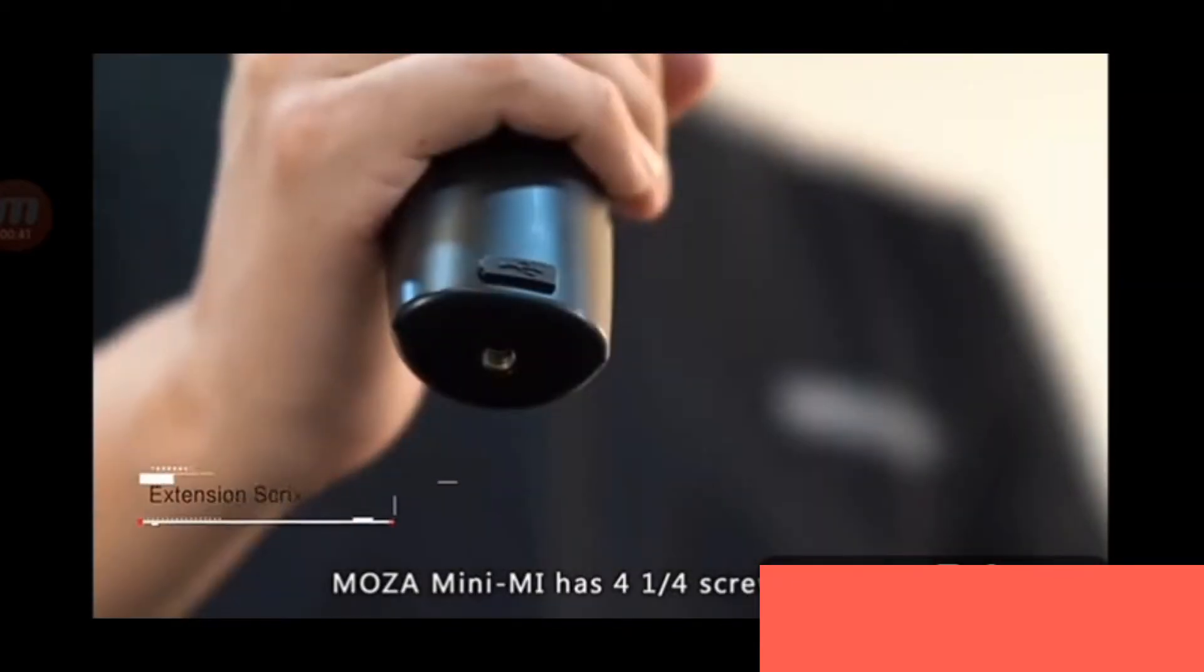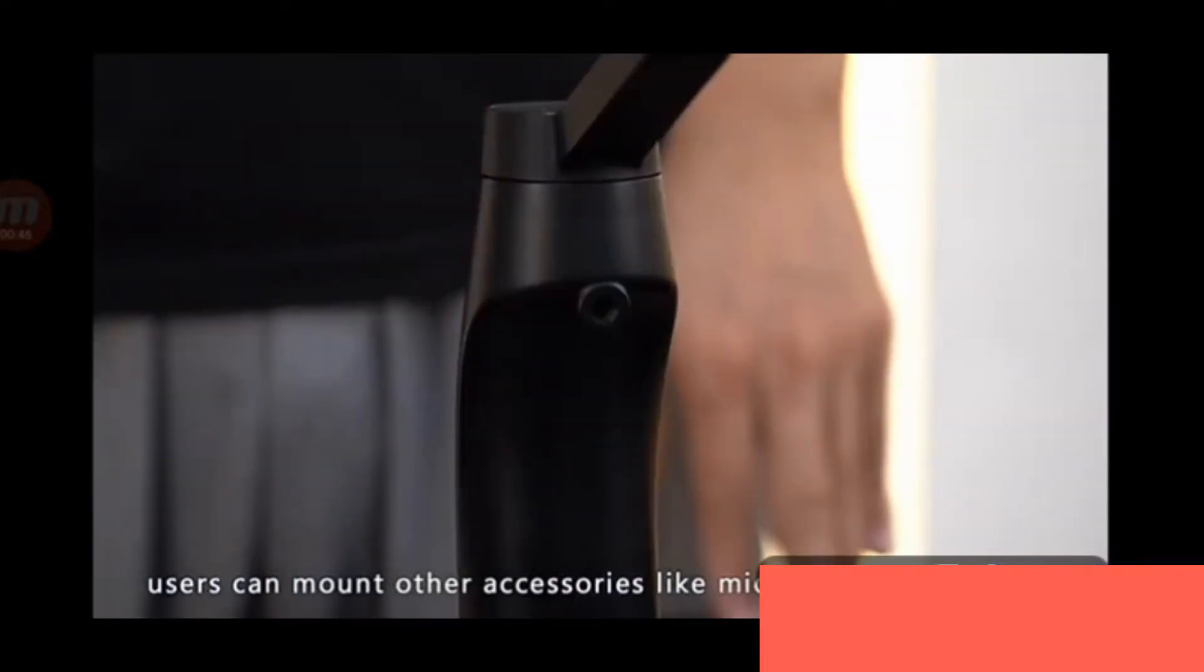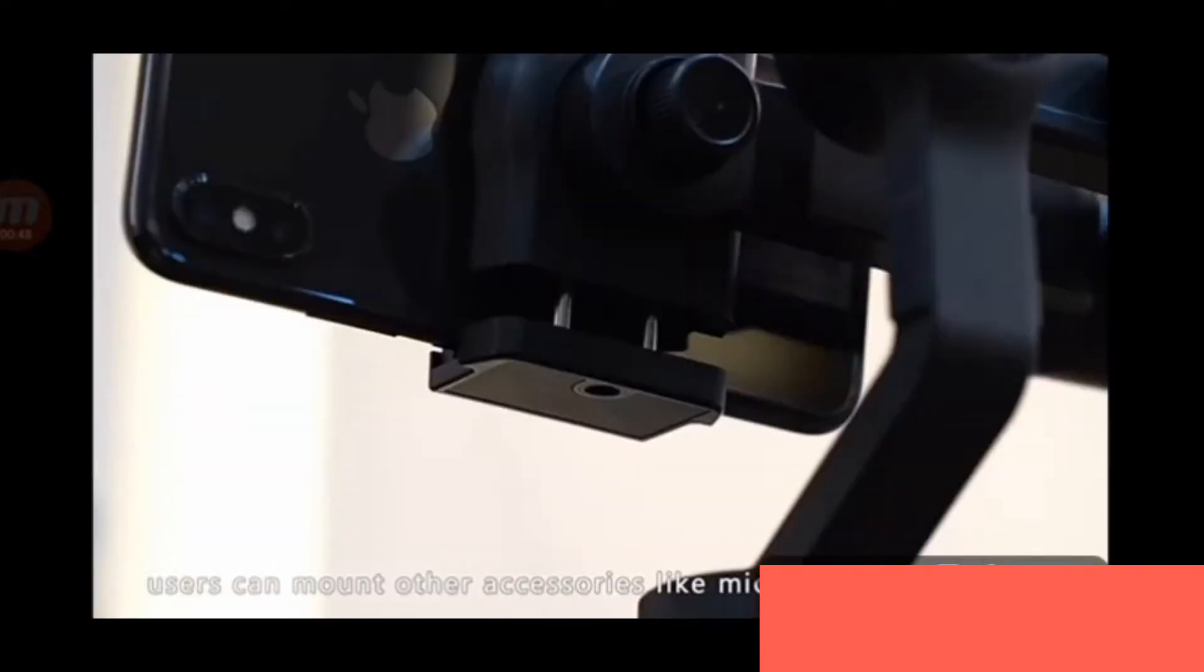The MOZA Mini-Me has four quarter inch screw holes, so users can mount other accessories like a microphone, LED lights, and a tripod.